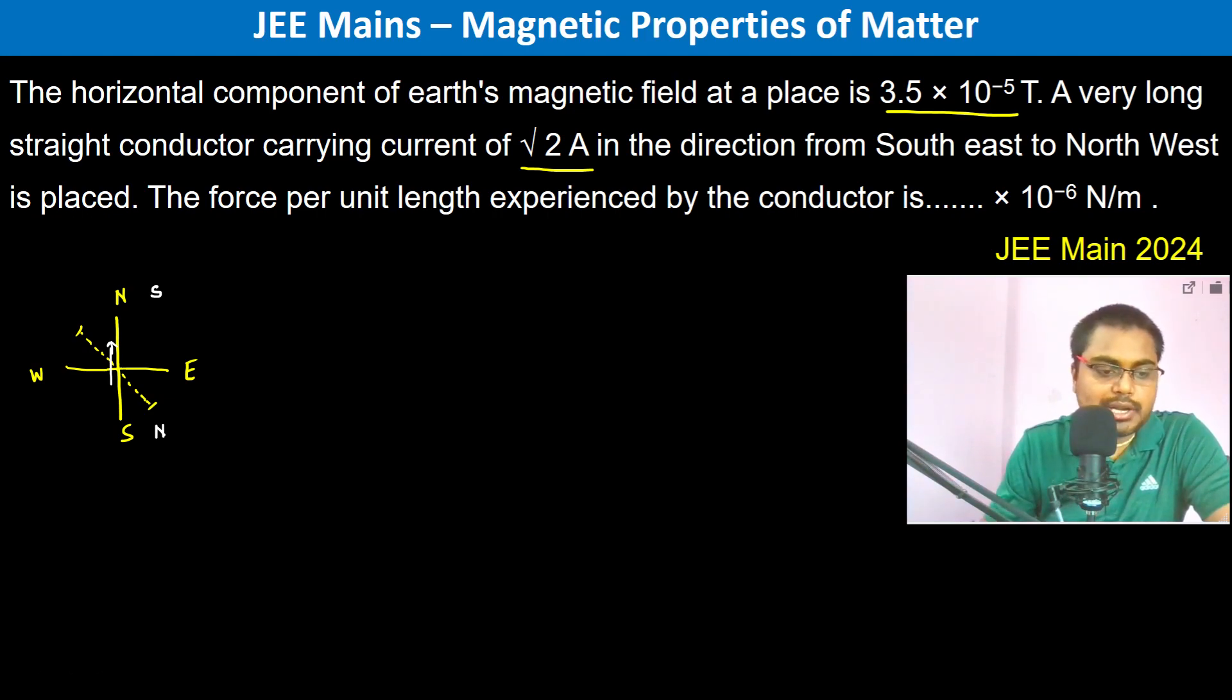Now we have the force per unit length. So force per unit length is going to be I L cross B. What is I? I is √2 ampere. L is 1 meter because it's per unit length.